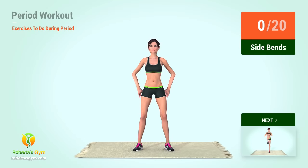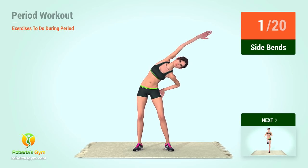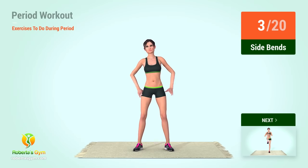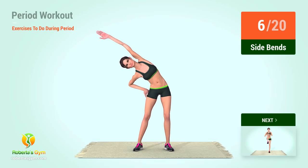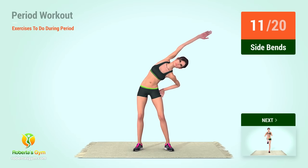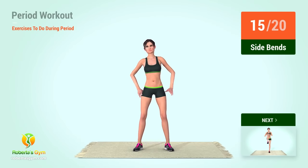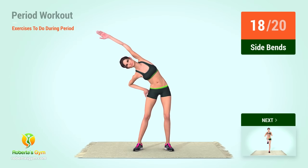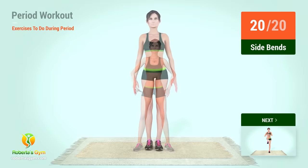Up next, side bends! In 5, 4, 3, 2, 1, go! 1, 2, 3, 4, 5, 6, 7, 8, 9, 10, 11, 12, 13, 14, 15, 16, 17, 18, 19, 20. Up next,